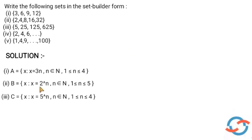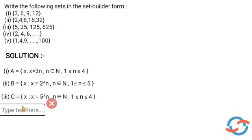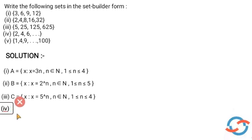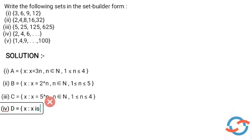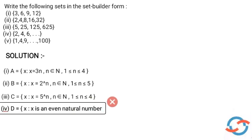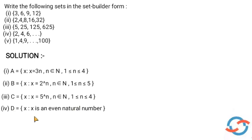The fourth question is the set {2, 4, 6, 8, ...}. These are all multiples of 2, which are even numbers. So x is an even natural number. The fourth answer is: D = {x : x is an even natural number}.